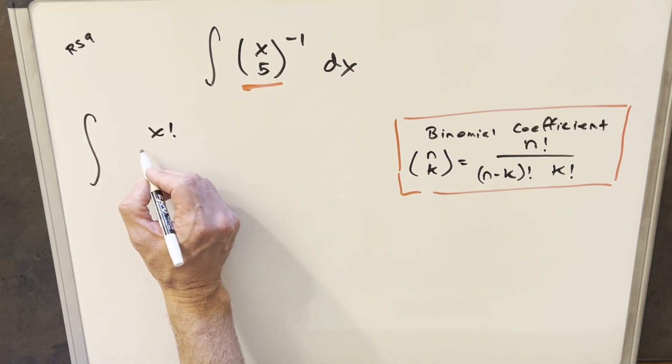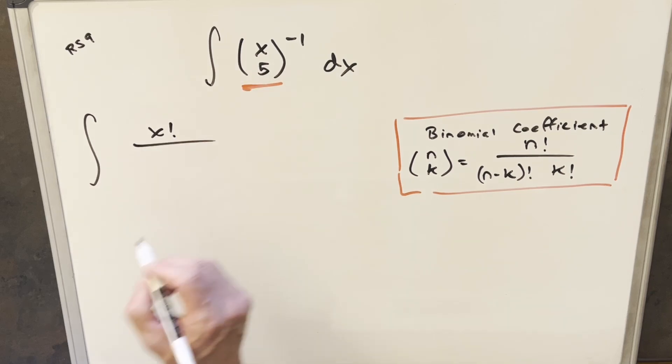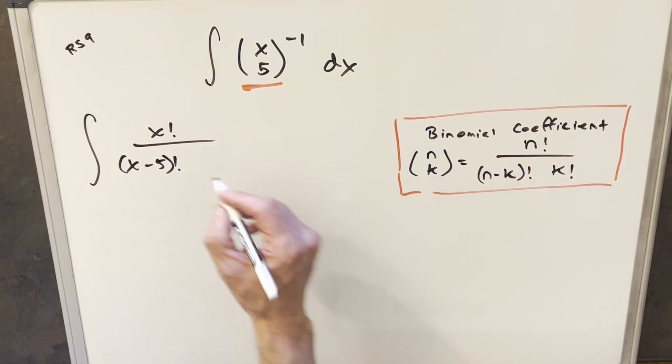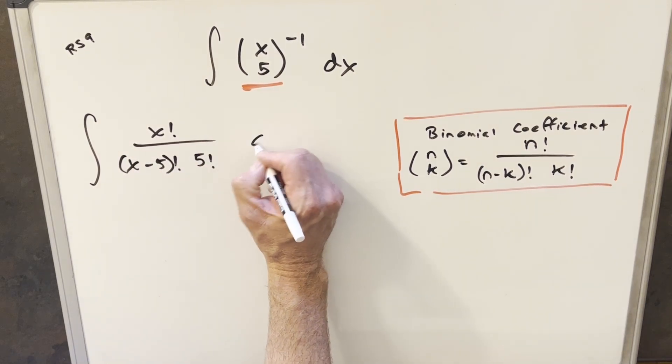So what I'll do is use this definition in order to rewrite my integral. So we'll have x factorial for our n in the numerator, and then we'll just have x minus 5 factorial times the k value, which is 5 dx.